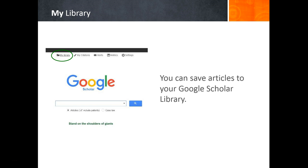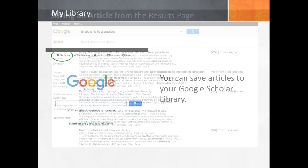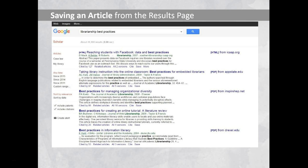As you quickly scan the results page, you can save articles that you want to look at more closely later. The only way to save articles is from the results screen. Once you click on an article title, you are navigated out of Google to that webpage. To save an article, simply click the Save button at the bottom right corner of each result.